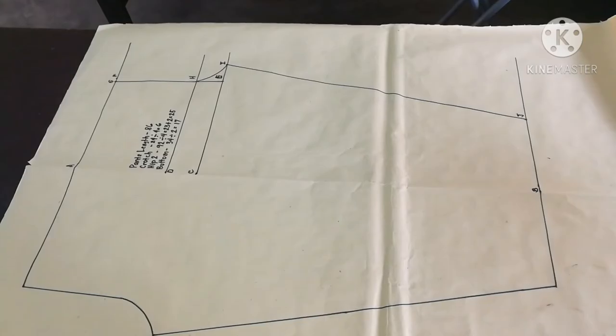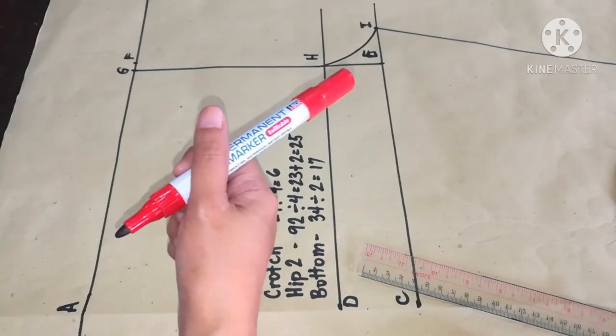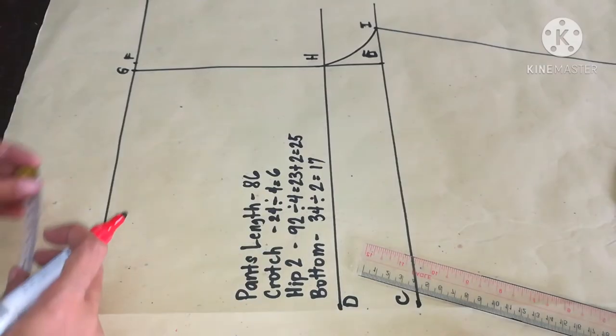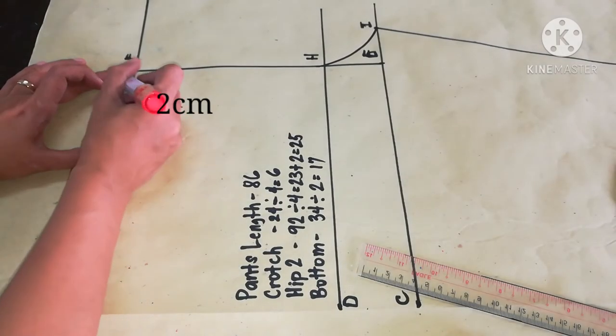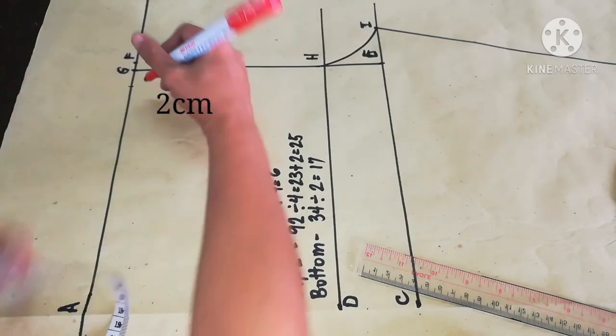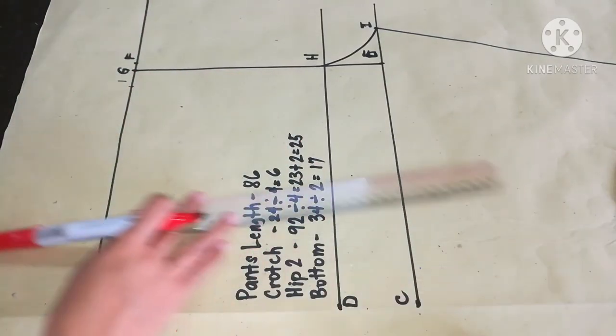Now we are ready in making the back part of pajama. This time I will use red marker in making the back part. From G, measure 2 cm inward and mark it point 1.